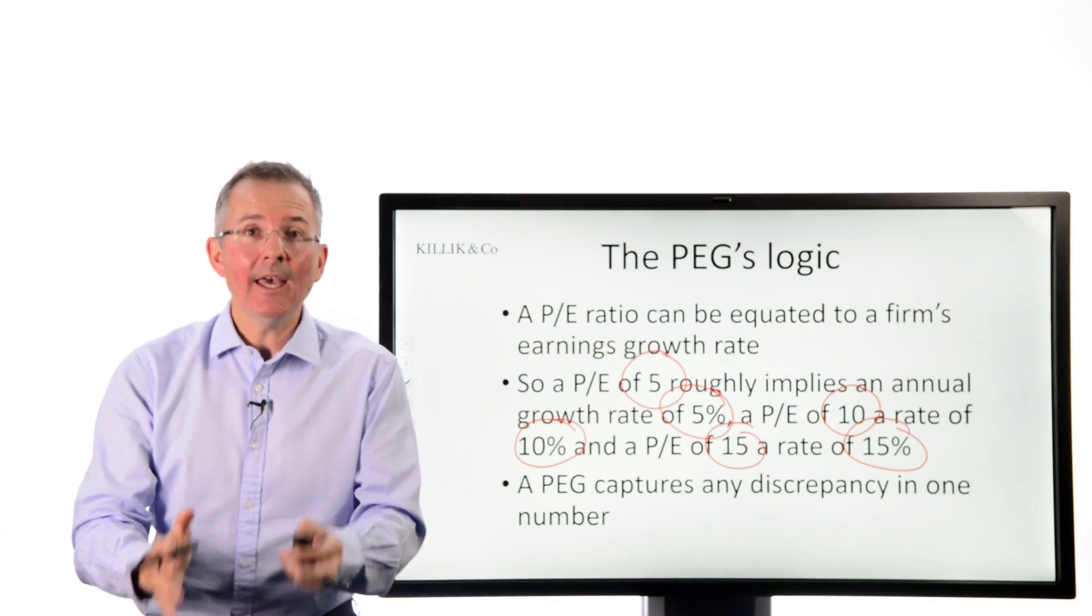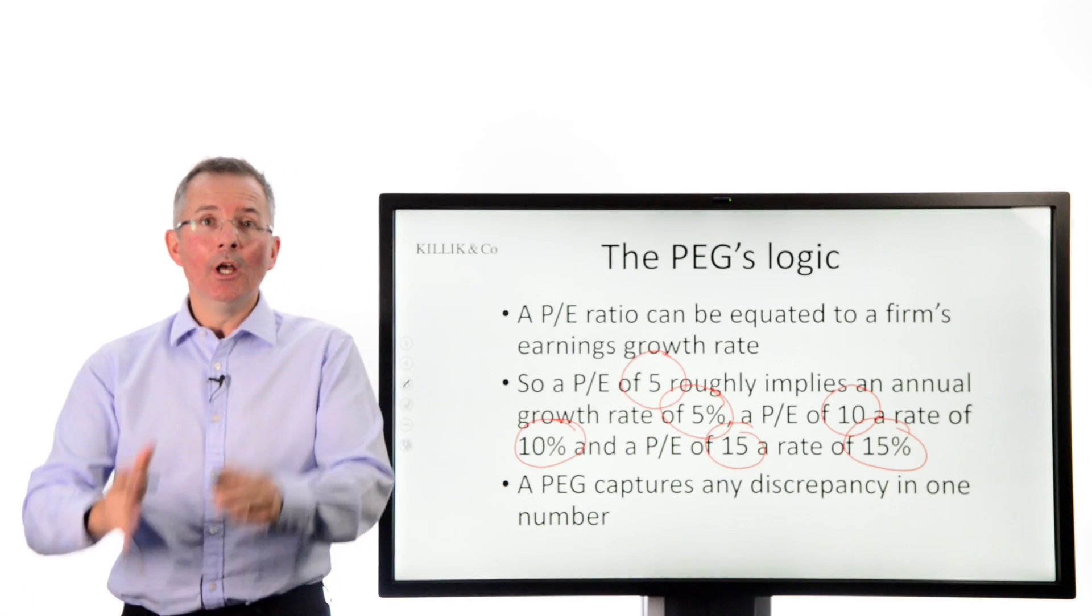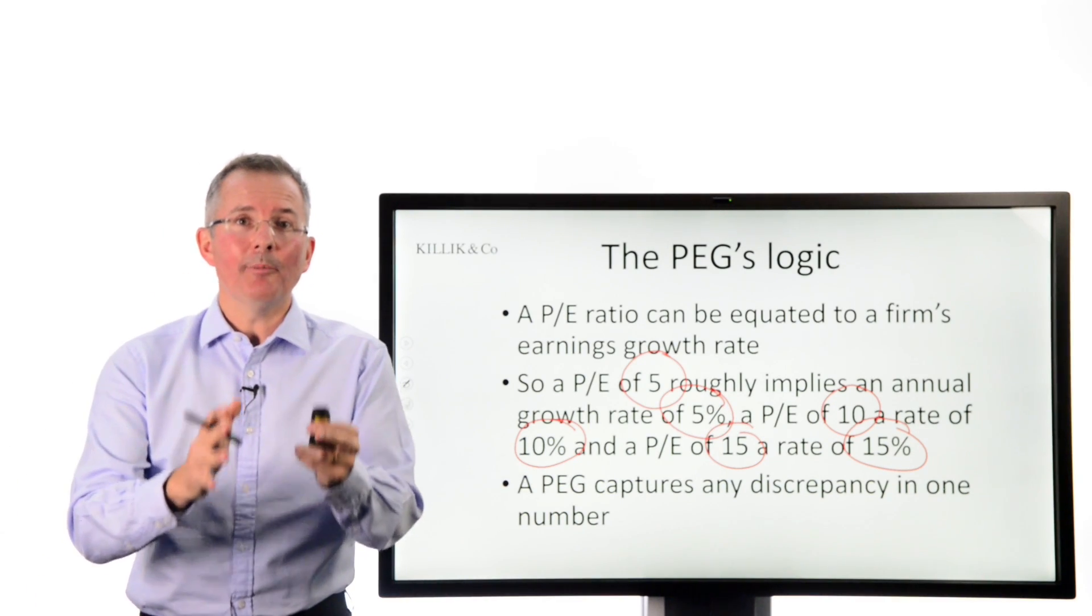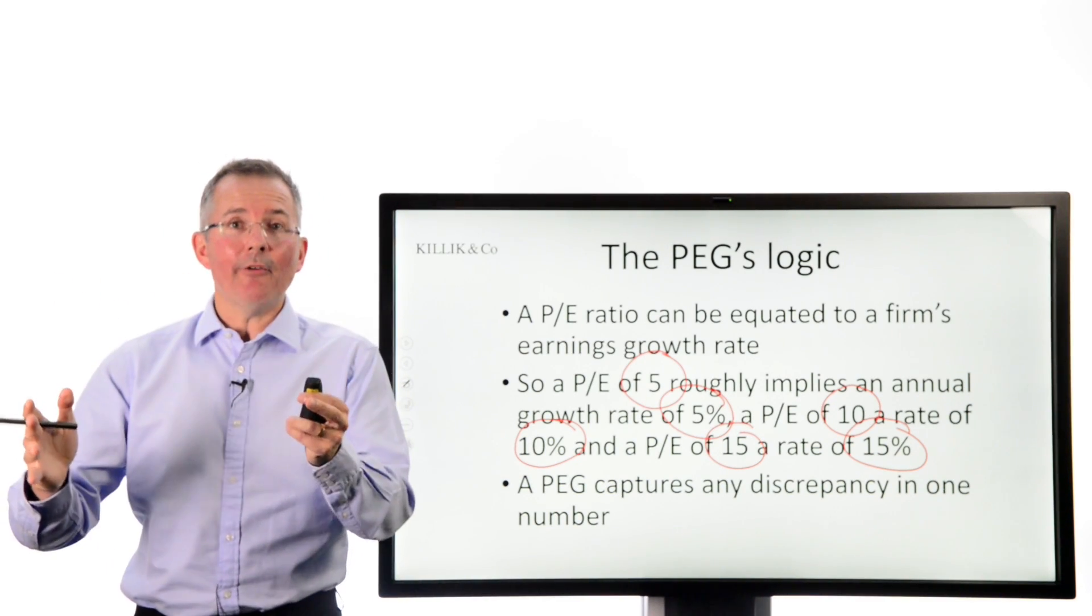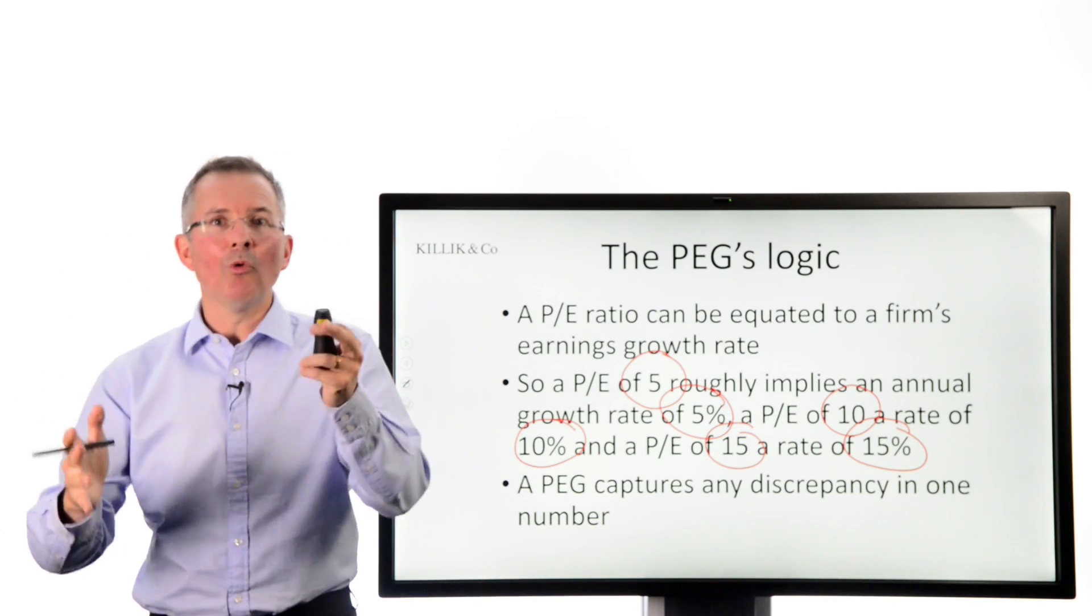So the PEG asks the question, well, is that what I'm seeing? If I compare the PE ratio to a forecast, the firm's earnings growth rate in the future, is the PE ratio kind of accurate? Is it in the right ballpark?